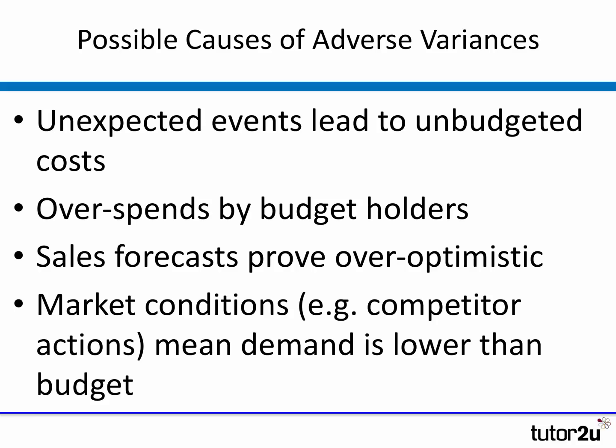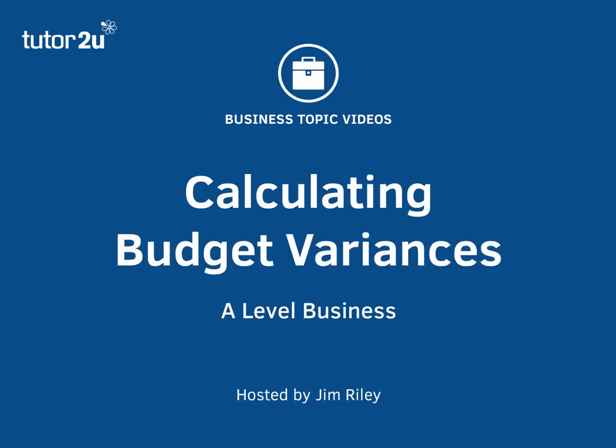The flip side is adverse variances. This often happens in budgeting where costs arise that you simply didn't expect at all — a cost that was never budgeted will always be an adverse variance. It could also be that budget holders are allowed to overspend, or on the sales side the budget was too optimistic about output or price. There are all sorts of reasons why it's easy to get the budget wrong and for variances to prove adverse. That's a brief introduction to calculating budget variances.